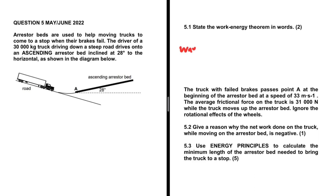The net work done on an object equals the object's change in kinetic energy — that is the work-energy theorem. Now let's take a look at question 5.2: give a reason why the net work done on the truck while moving on the arrestor bed is negative.